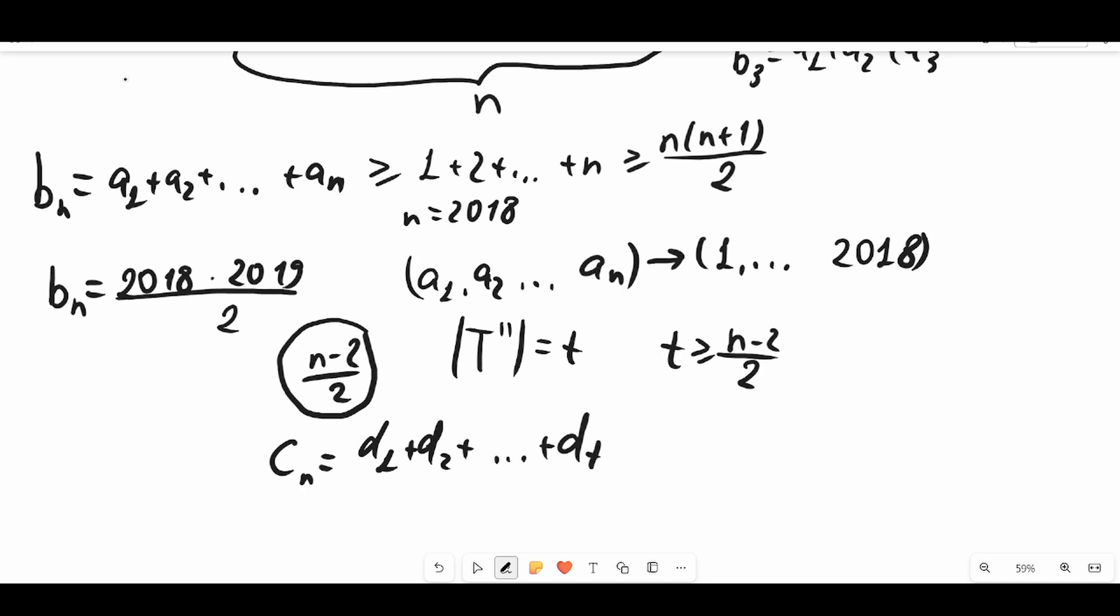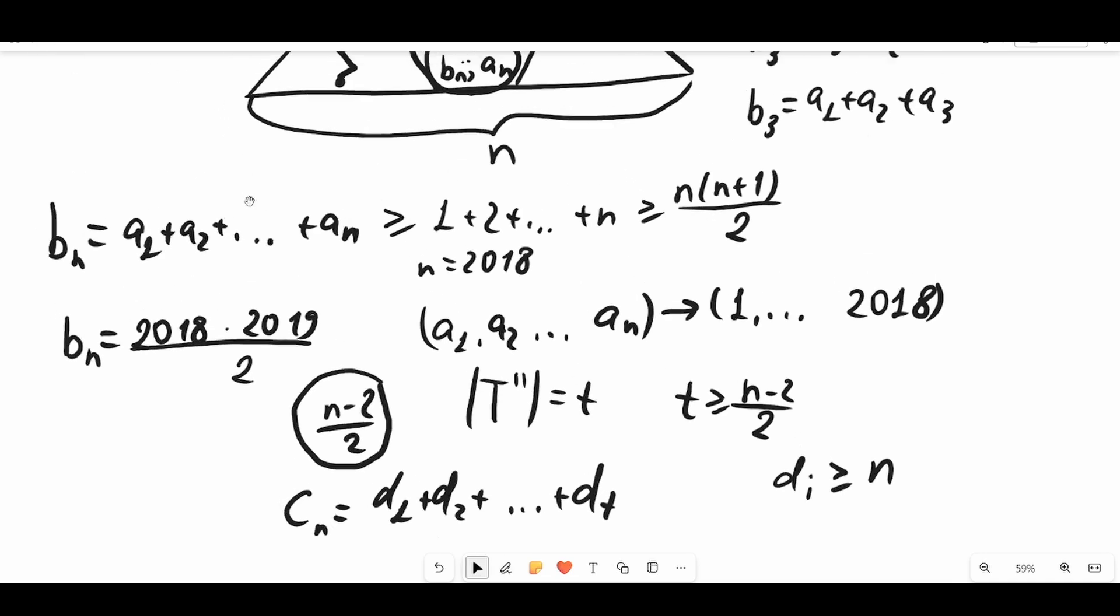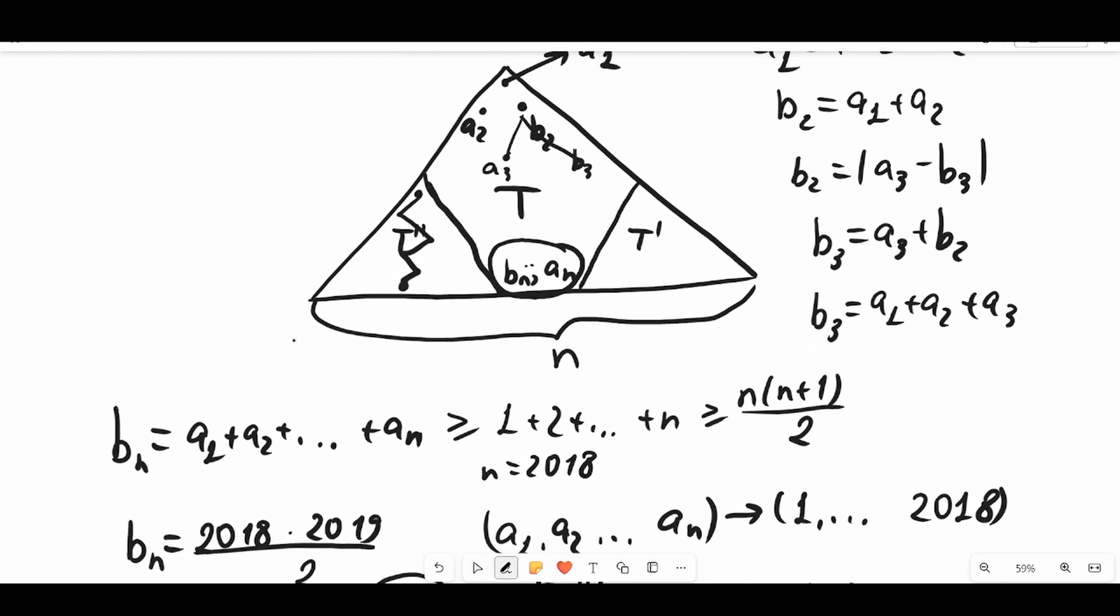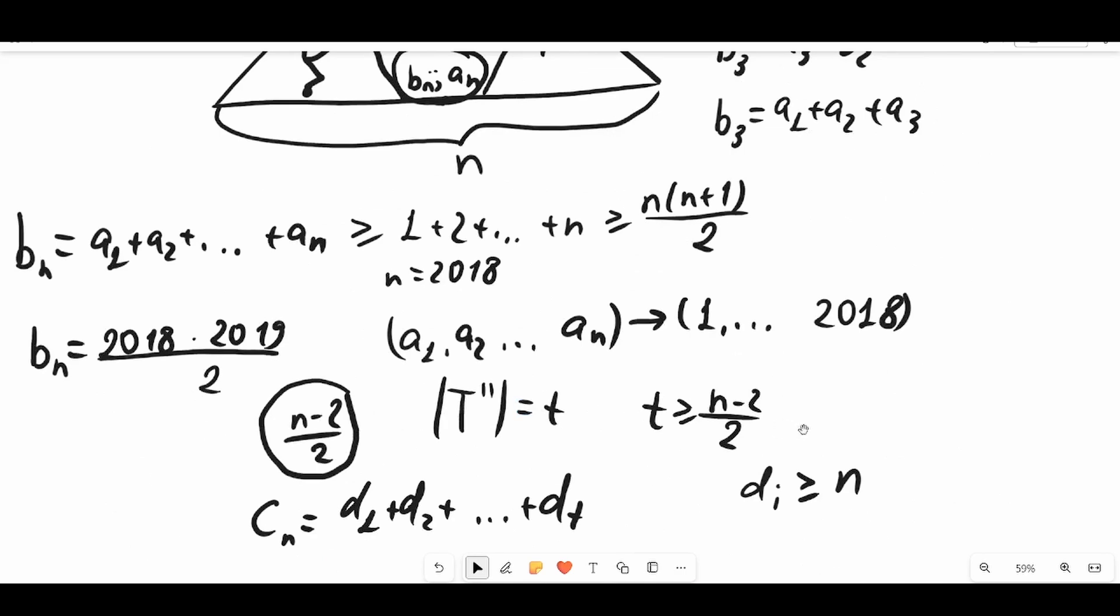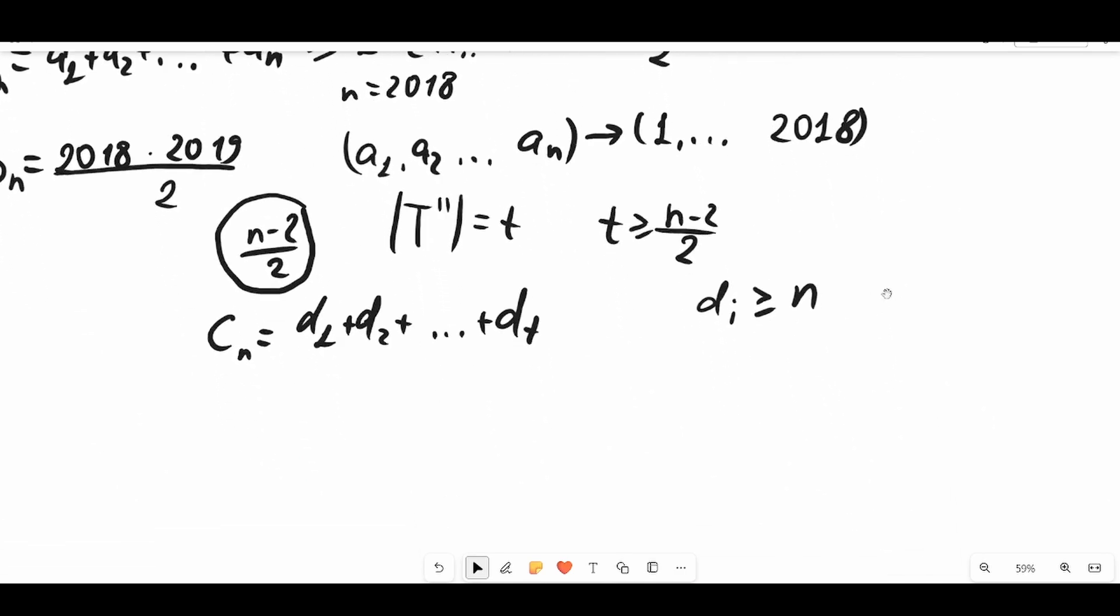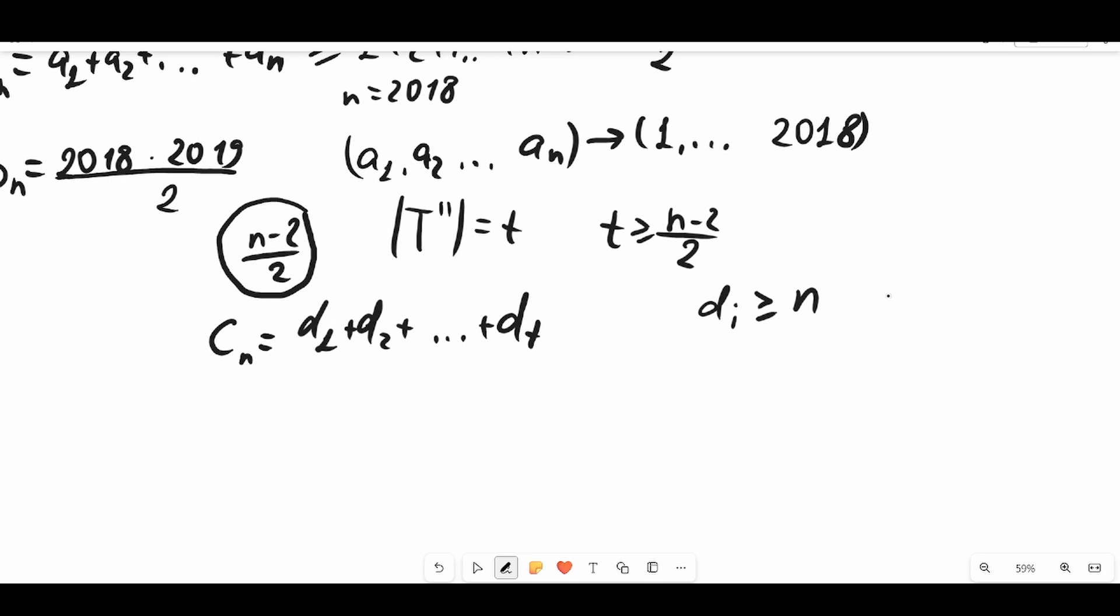Also we know that all these numbers d1, d2, up to dt, di is greater or equal to n, because we have already used the first n numbers while making this path from the apex point to the lower level. So we know that di is greater or equal to n, and what can we say about cn?